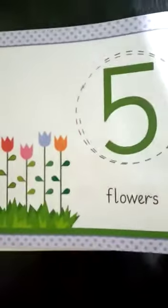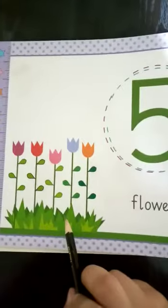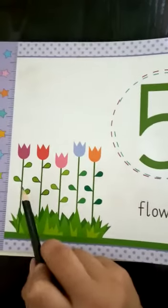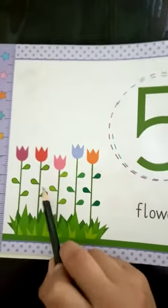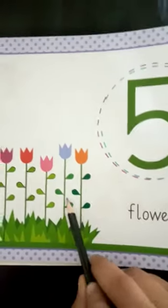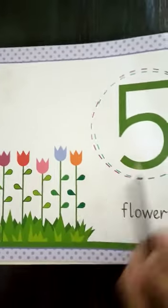Ok students, now move to your math book. Count how many flowers are there: 1, 2, 3, 4, 5 — 5 flowers.